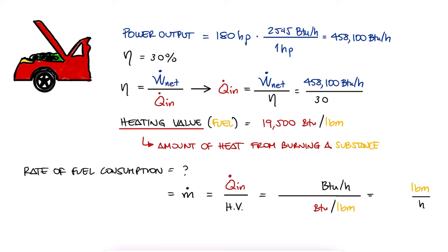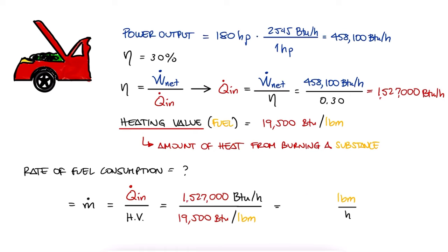We substitute the power and the efficiency to get the heat rate, and we substitute this value in our first expression to find that the mass flow rate needs to be 78.3 pound mass per hour for the car to produce 180 horsepower.